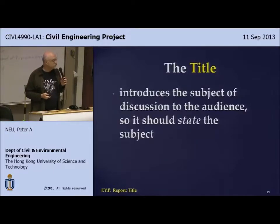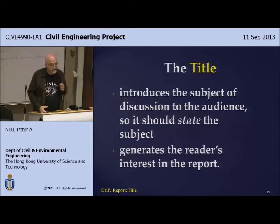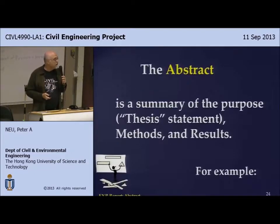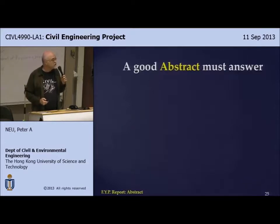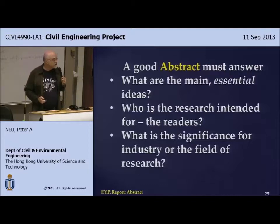One of the purposes of the title is to generate the reader's interest. Your advisor is already interested in the subject area, but if you can persuade me that it's interesting with your title, I thank you. The abstract is a summary of the purpose — the thesis statement — methods, and results: just the essential points. A good abstract must answer: what are the main essential ideas, who is the research intended for, and what is the significance for the industry or field of research?